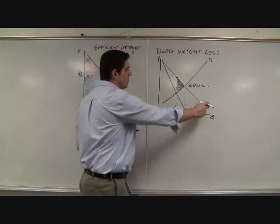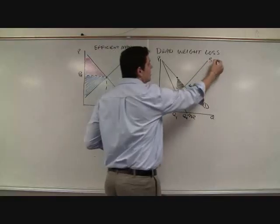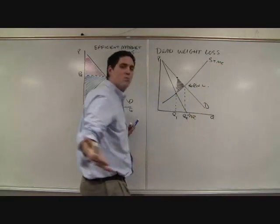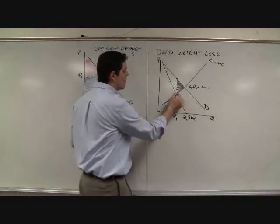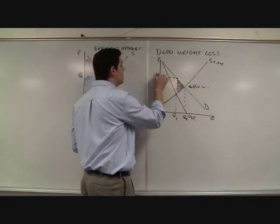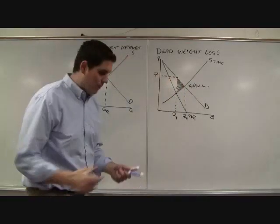There it is. Marginal revenue, demand. They produce where MR hits the MC, which is right there, which is kind of a supply curve in this example. Marginal revenue, marginal cost here. They charge a price up to demand. And what do we have? We have Deadweight Loss.